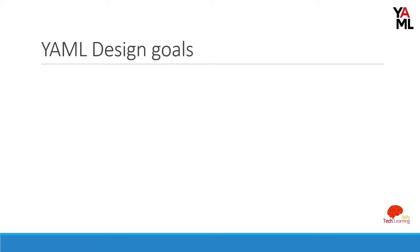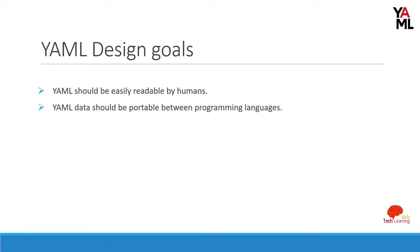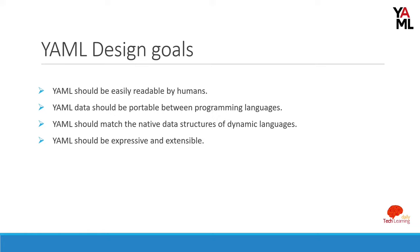Let's understand YAML's design goals and how they've helped make it popular. First, YAML should be easily readable by humans — that is the first priority. Second, YAML data should be portable between programming languages. Third, YAML should match the native data structures of dynamic languages. Fourth, YAML should be expressive and extensible. Fifth, YAML should be easy to implement and use. When you use YAML you'll feel that all these design goals are properly implemented.